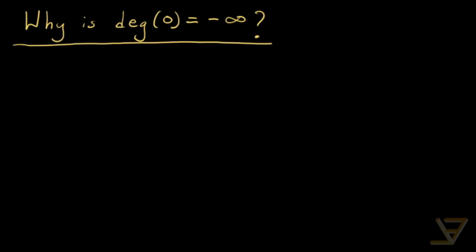Hi everyone, let's talk about the degree of the zero polynomial. We have the convention that the degree of the zero polynomial is equal to negative infinity, and this might seem kind of strange because that's not even a number. So let's look at the origins of this convention.